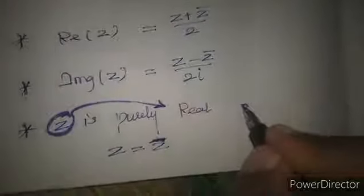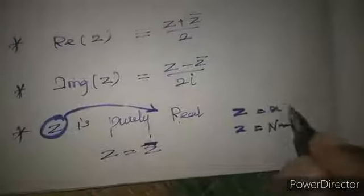The next one: z is purely real part. For this reason, z equal to z bar. So z equal to some number with no imaginary part.